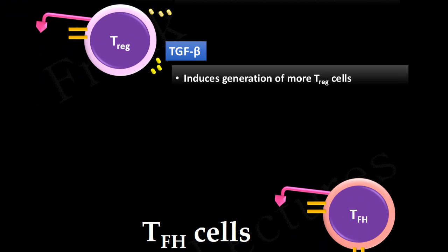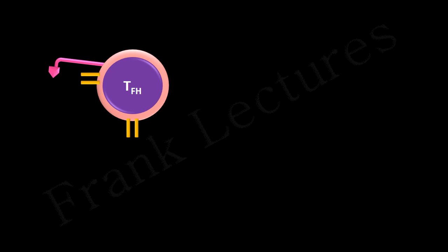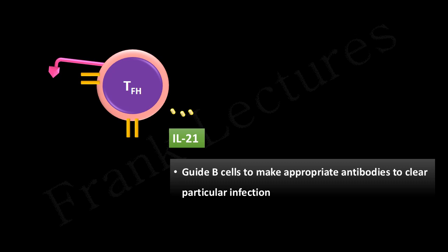Follicular helper T cells secrete interleukin-21, which guides B cells to make suitable antibodies for clearing an infection. Thus, like T helper type 2 cells, these follicular helper T cells help B cells in eradicating infections.